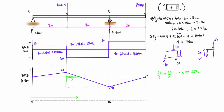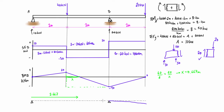That means at a distance of 2 plus 0.667 = 2.667 meters from the left, there is an inflection point in the deflected structure. The beam bends down slightly from the load, then with the same concave-down curvature until the inflection point at 2.667 meters, after which the curvature reverses to concave up, and the beam curves back down to the right end.